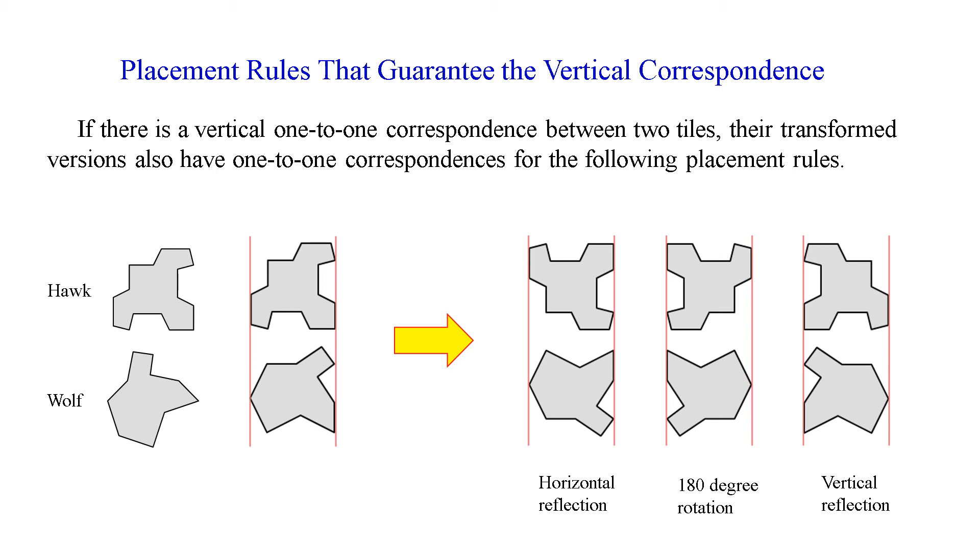Here we have a tile of a hawk and that of a Uruk head, which have one-to-one correspondence for their left orientations. We place the tiles by translation, rotation, and reflections to cover the plane.